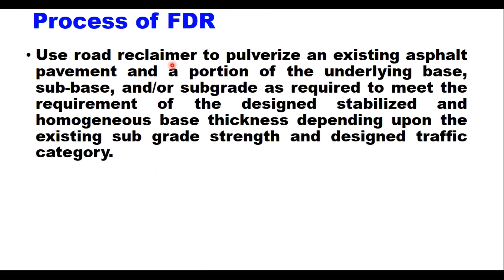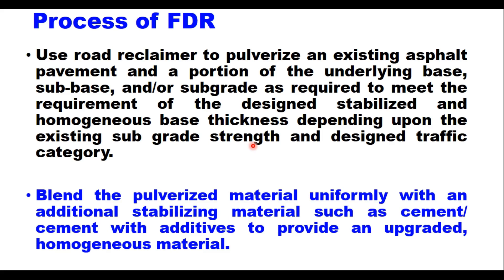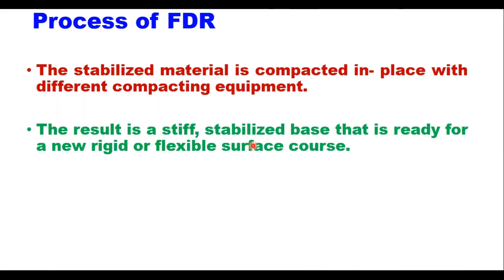The FDR process uses a road reclaimer or recycler to pulverize an existing asphalt pavement and a portion of the underlying base, sub-base, and/or subgrade as required to meet the designated stabilized and homogeneous base thickness. Depending upon the existing subgrade strength and design traffic category, the pulverized material is blended uniformly with additional stabilizing material such as cement or cement with additives. The stabilized material is then compacted in place with compacting equipment, resulting in a stiff stabilized base ready for a new rigid or flexible surface course.